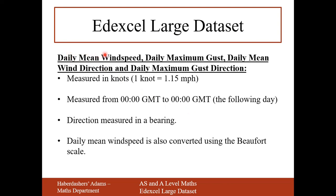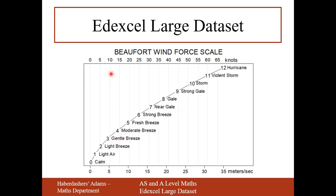Wind-related variables include daily mean wind speed, daily maximum gust, daily mean wind direction, and daily maximum gust direction. Daily mean wind speed is measured in knots — approximately 1.15 miles per hour — measured from midnight to midnight, unlike temperature which runs 9am to 9am. Wind direction is measured in a bearing. Daily mean wind speed is also converted using a Beaufort scale. For example, 30 knots would be near a gale. On the spreadsheet, Beaufort scale is stored as word phrases, so it's not numerical data we can analyse mathematically.